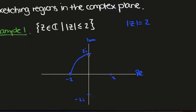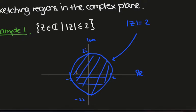Then this region here, so this circle here, this is when mod z, the absolute value of z, is equal to 2. And since we want it less than or equal to 2, we just have this entire disk here, so this entire region. And that's it for this example.